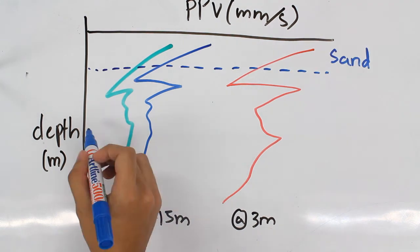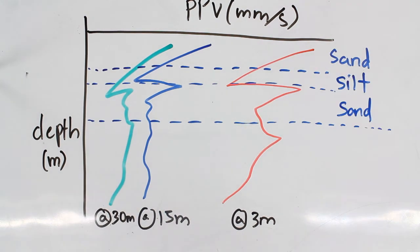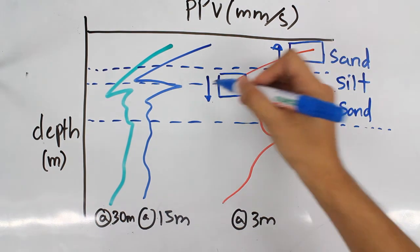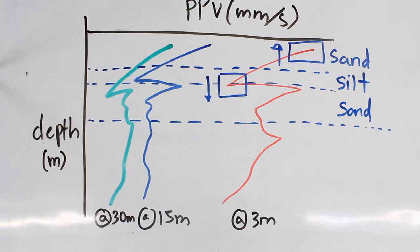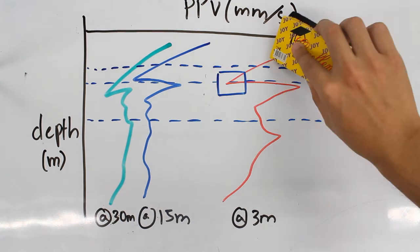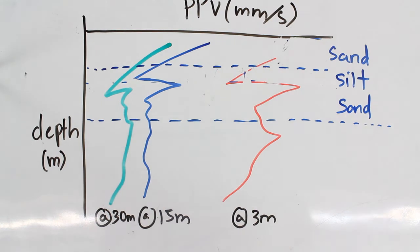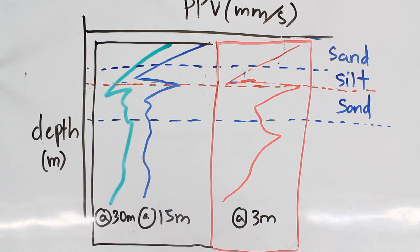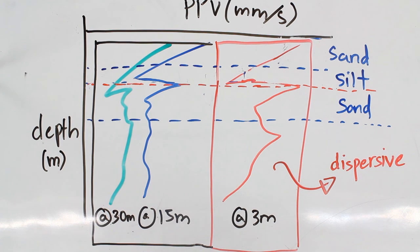The data shows that at the 3 meter distance, larger magnitudes of PPV were obtained when the pile was being driven in the sand layers as compared to silt layers. This can be attributed to the presence of different soil properties. But what was interesting to see is that the vibration magnitudes dispersed at a broad range only at the 3 meter distance. But at 15 and 30 meter distances, they clustered to a much closer range regardless of the type of soil the vibrations were emitted from.